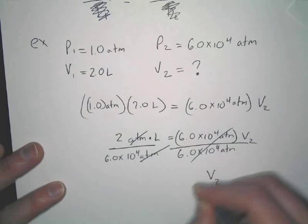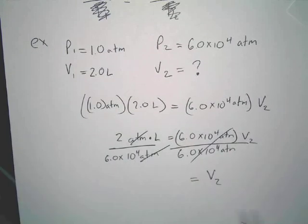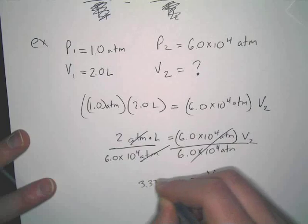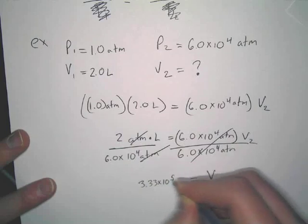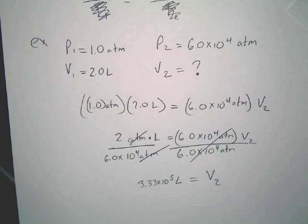And your V2 ends up being, what in this case? 3.3 times... Okay, I just wanted to make sure. So that is how you do a really simple gas law problem. Really simple. You identify your variables. You figure out what equation you're using. And then you just simply do the math to solve.